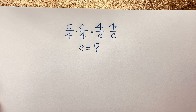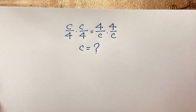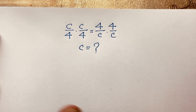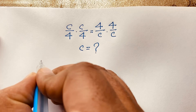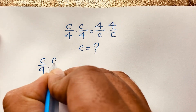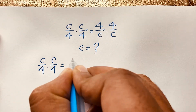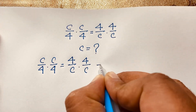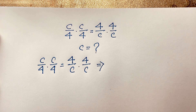Hello everyone. In this video we have solved a nice math question. This question is c over four times c over four is equal to four over c times four over c. We'll find out what is the value of c in this math question. So let's start our question.